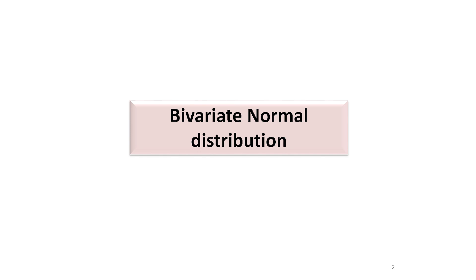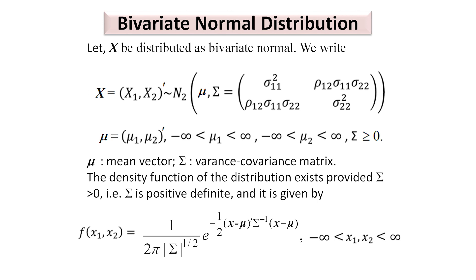Let us first look at the bivariate normal distribution. Suppose x is a random vector defined by x1 and x2 — these are two random variables. Suppose x has a bivariate normal distribution. Then we write that x is distributed as N2(mu, sigma). Here, mu denotes the mean vector of x, while sigma denotes the variance-covariance matrix, or dispersion matrix, of x.